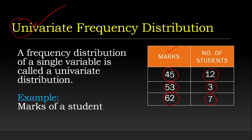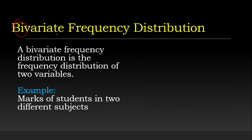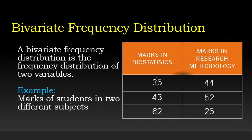A bivariate frequency distribution is the frequency distribution of two variables. 'Bi' means two, so it is called bivariate frequency distribution. For example, marks of students in two different subjects — marks in Biostatistics and marks in Research Methodology.